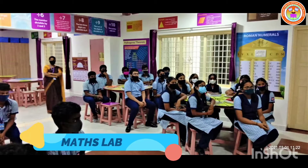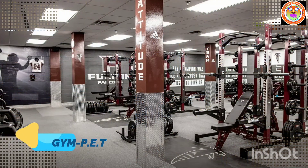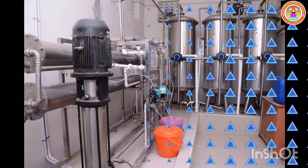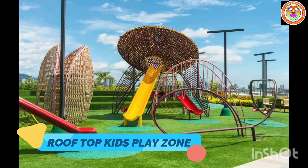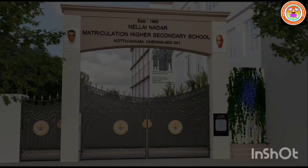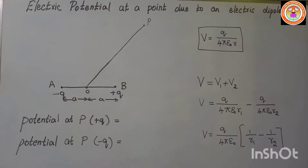In the last topic we studied about electric potential due to a point charge. Here we are going to calculate the electric potential due to an electric dipole.